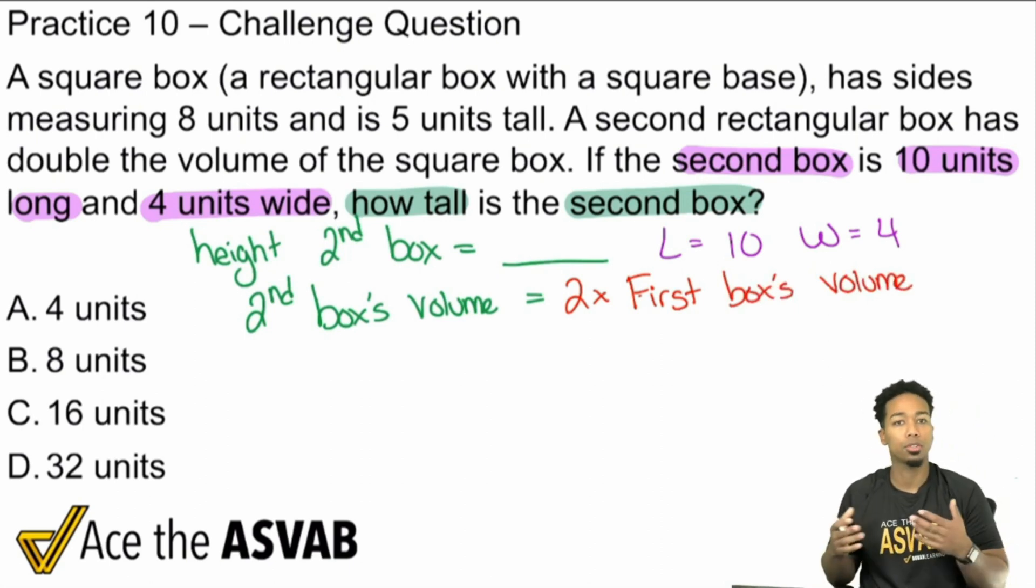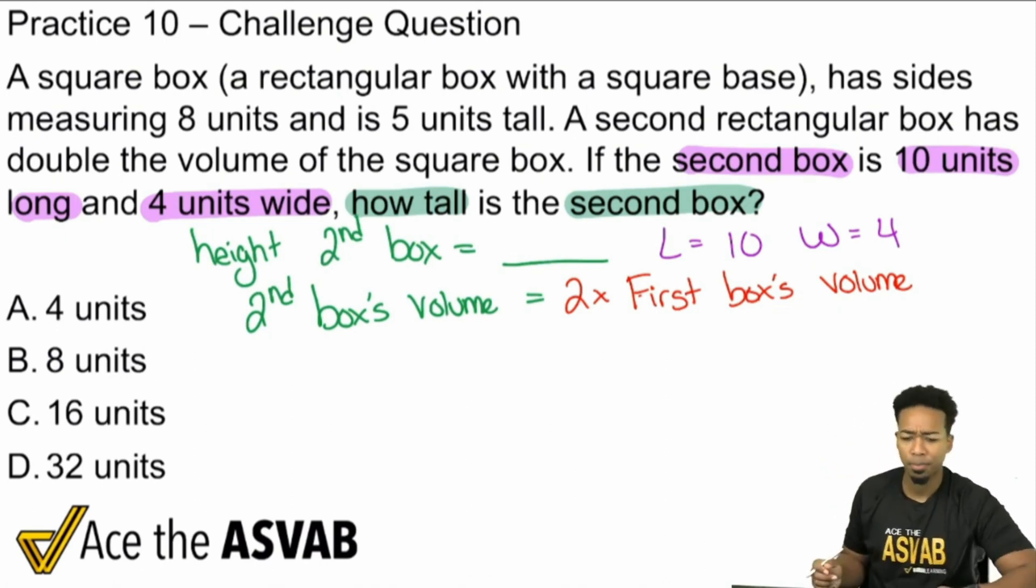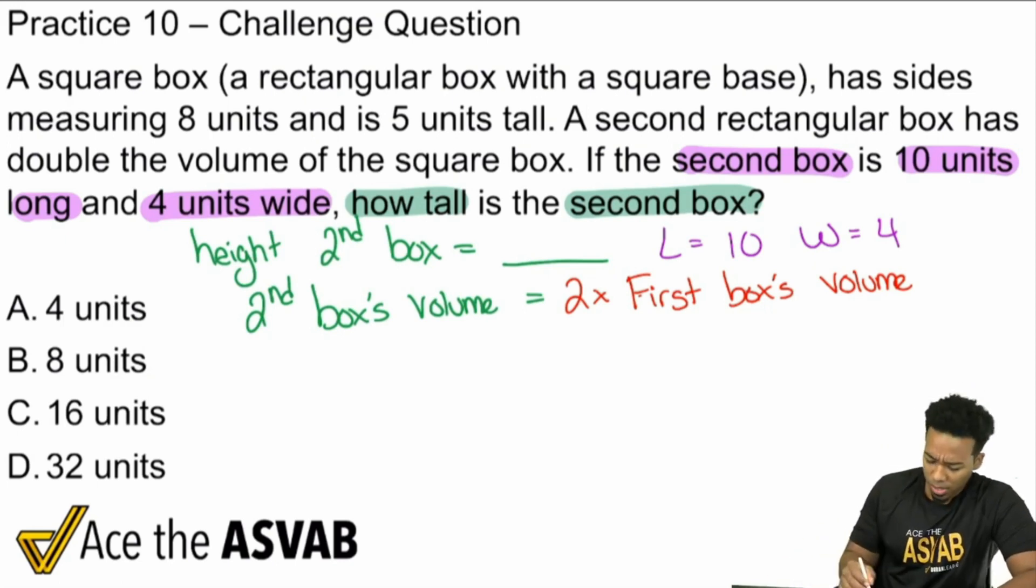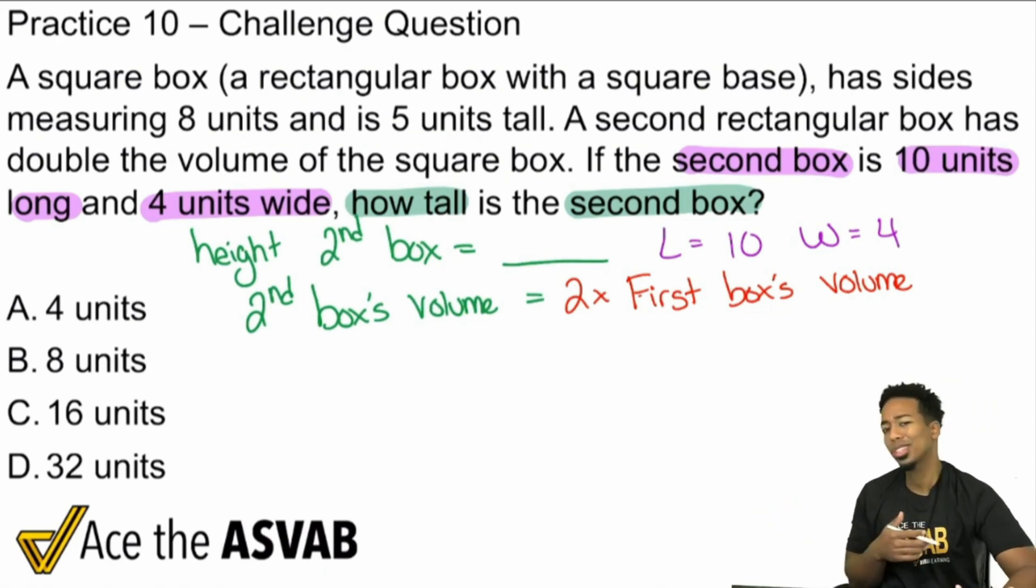And so of course as you're doing the test itself, you don't want to write everything down, but you want to kind of log that information in your head and you want to say, okay cool, that's important, that's important. Do your thing. So now that we're here, notice how I skipped the 8 and the 5 until now. I skipped that because it wasn't really necessary for the problem until I knew what the first box had to do with the second box.